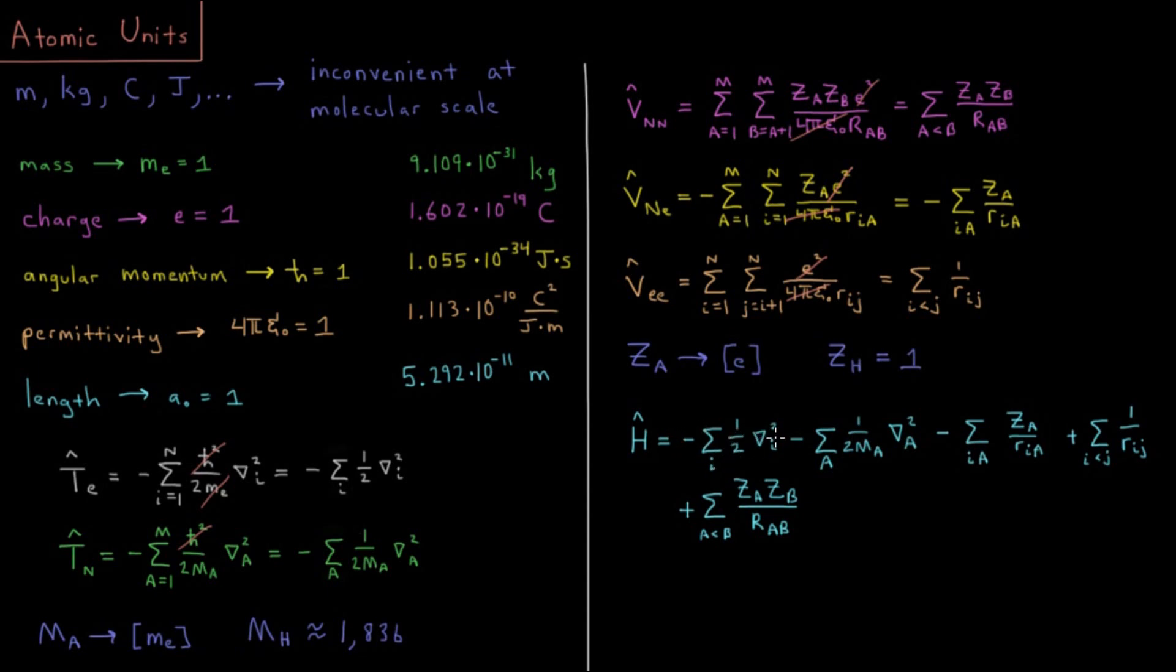This will be negative sum over all electrons, 1 half del squared i, minus sum over all nuclei, 1 over 2 mass of nucleus, times del squared a, negative sum over all electrons and nuclei, charge divided by distance, plus sum over all electron pairs, 1 over their distance, plus sum over all nucleus pairs, their number of protons multiplied, divided by how far they are apart.